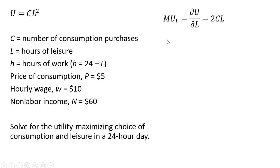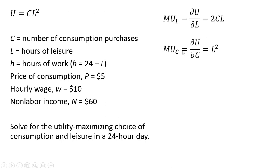First, we get the marginal utility of leisure by taking the partial derivative of the utility function with respect to l. We get 2cl — the exponent on the l term comes down in front and we subtract 1 from that exponent. Then we get the marginal utility of consumption by taking another partial derivative, and we get back l squared.